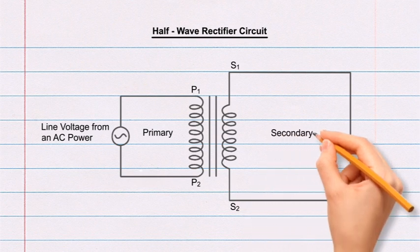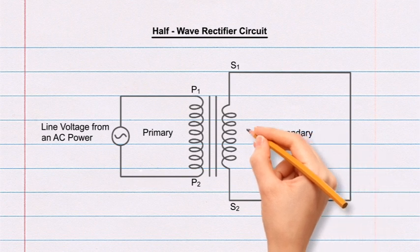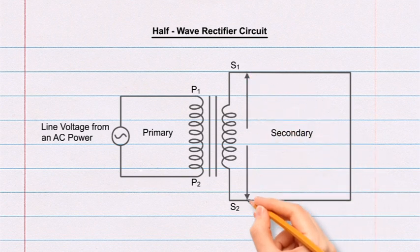Mark secondary at the center of the larger rectangle. Draw a double-headed arrow beside the secondary winding touching both the top and bottom lines of the rectangle with an opening at the center, and mark it as VS at the opening.